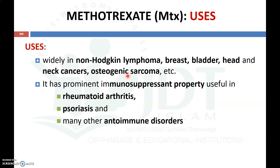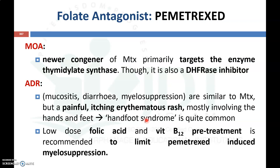Methotrexate is mainly used for the treatment of non-Hodgkin's lymphoma, breast, bladder, and head and neck cancers, and osteogenic sarcoma. It is also a prominent immunosuppressant drug used for immune disorders such as rheumatoid arthritis, psoriasis, and many other autoimmune diseases.